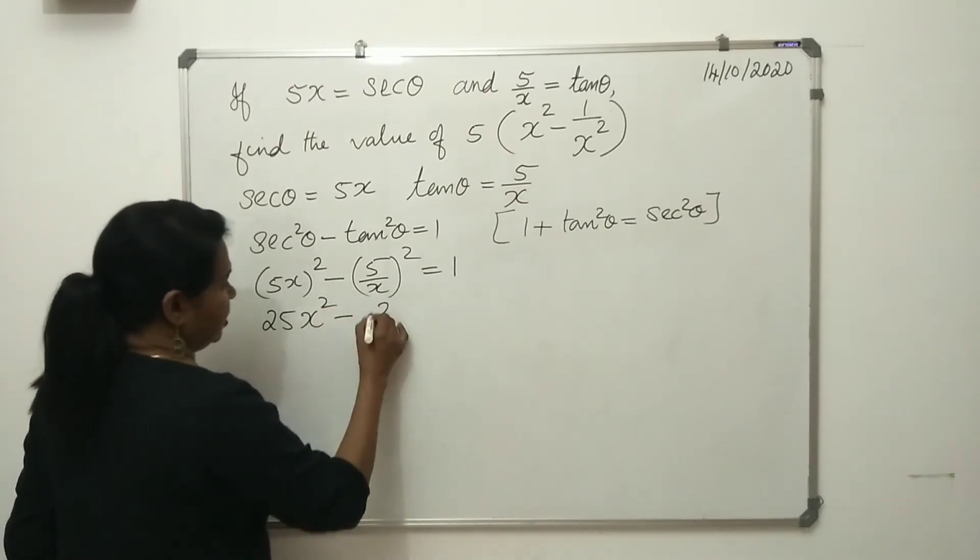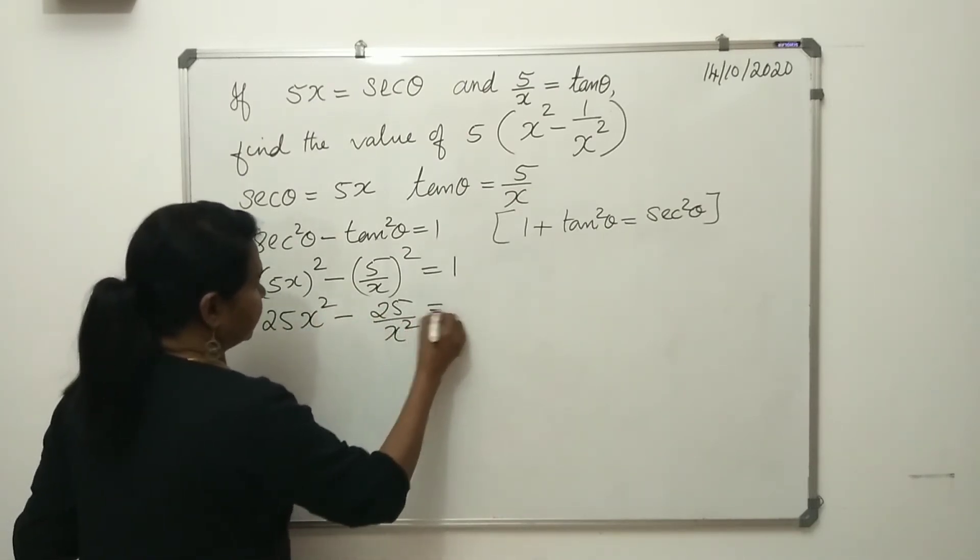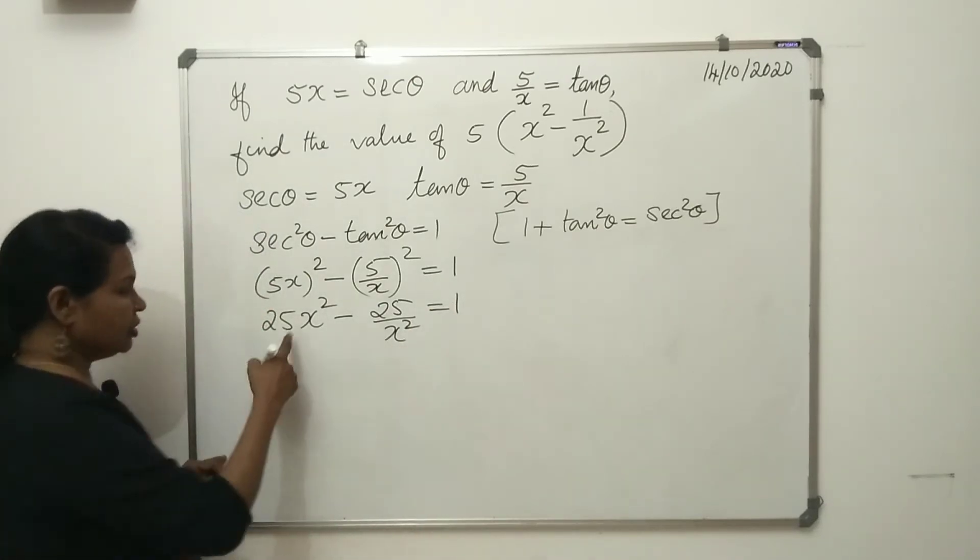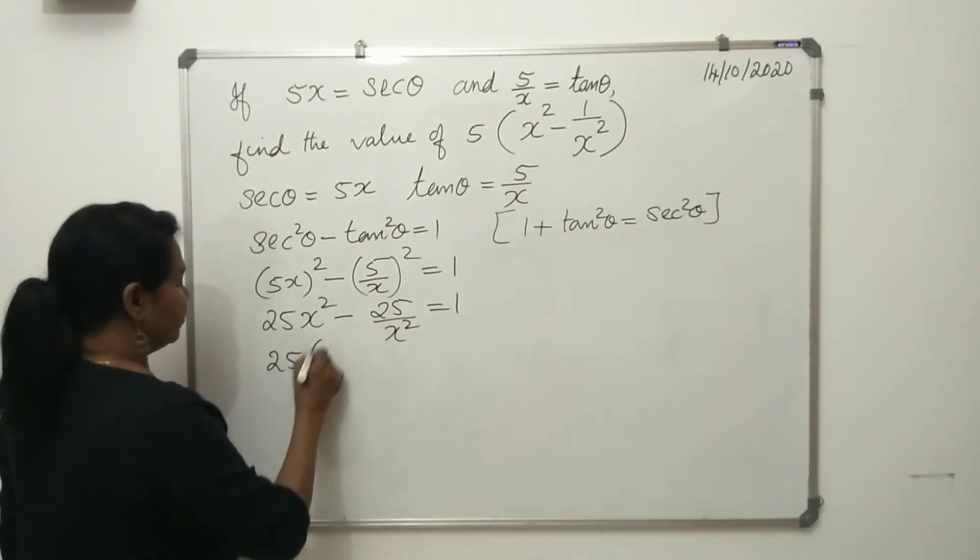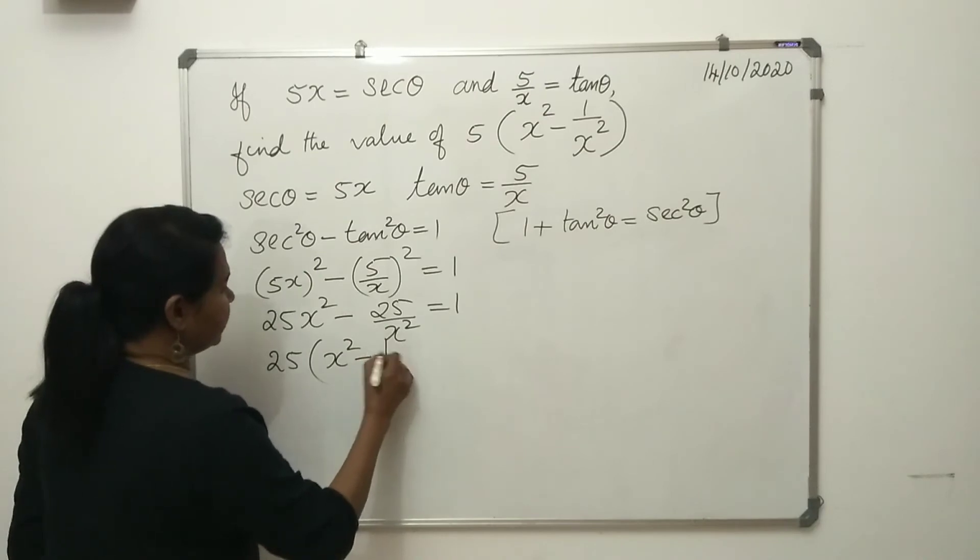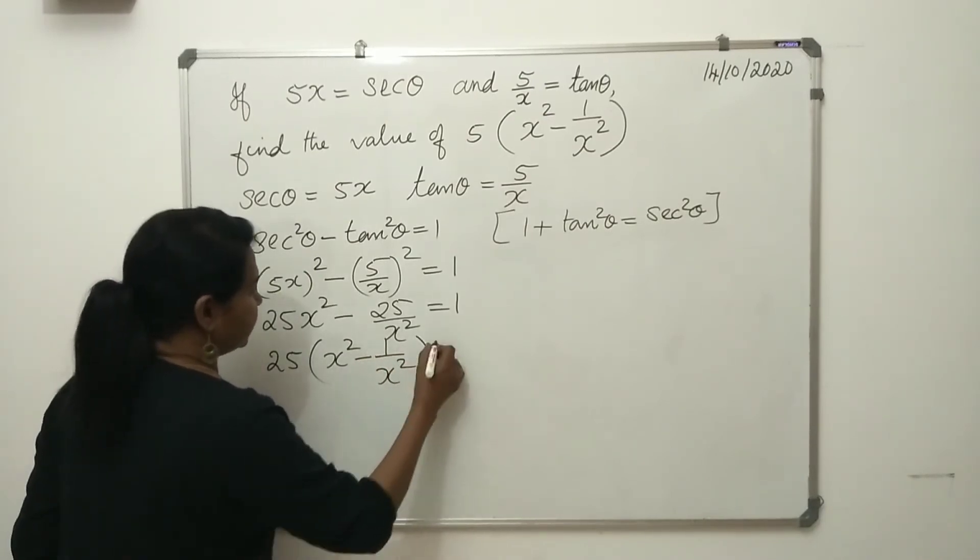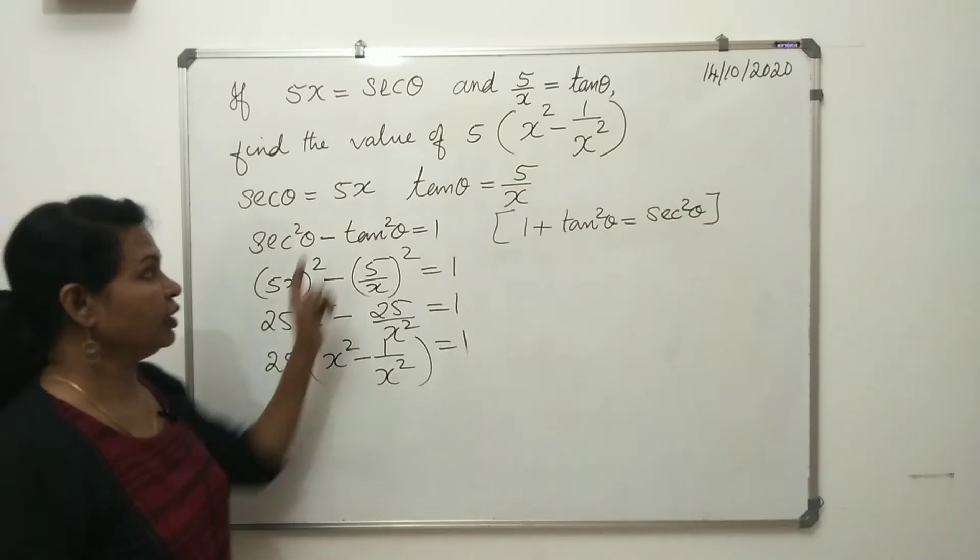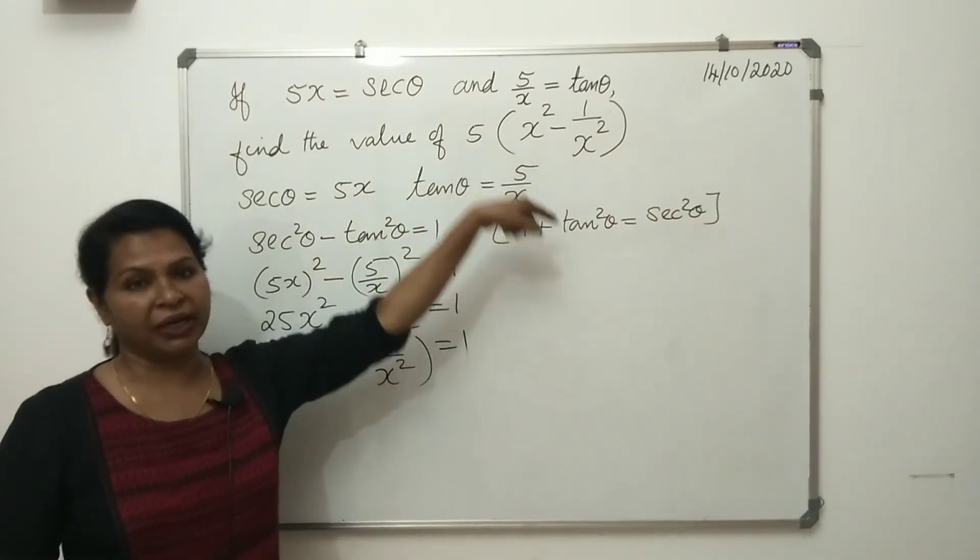Now taking 25 common, we get x² minus 1/x² equals 1/25. But we have to find the value of 5 times (x² - 1/x²).